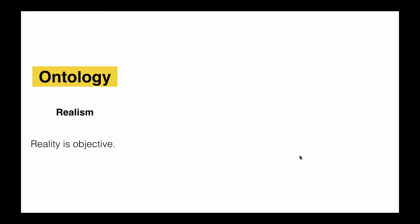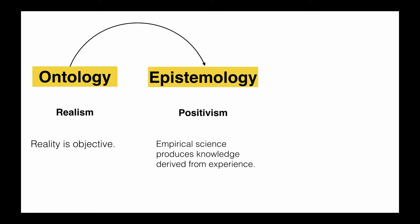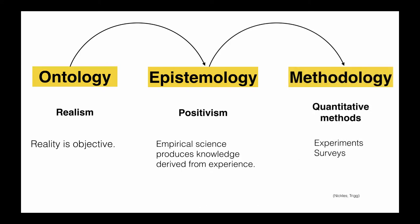With a realist ontology, reality is objective. That means it exists regardless of the observer, and even if there is no one there to describe it, reality does not cease to exist. For epistemology, positivism is an alternative. Positivism contends that the only true knowledge comes from empirical science. In other words, true knowledge comes from our ability to observe phenomena, craft hypotheses to explain them, and test those hypotheses.